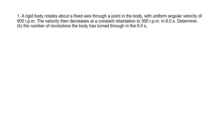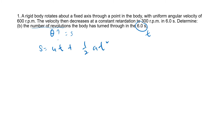Question (b) asks for the number of revolutions — that is, they are asking for theta, the angular displacement, during the first 6 seconds. Theta is equivalent to displacement s in linear motion. So we use the formula s equals ut plus half a t squared, which in rotational form becomes theta equals omega naught times t plus half alpha t squared.